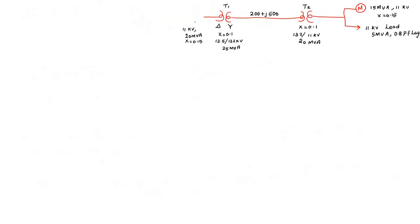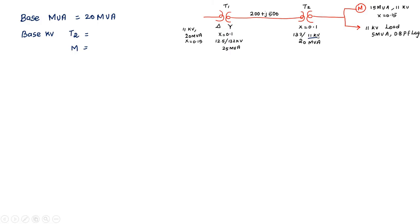Next, I am going to find out the base values for transformer 2 and the motor. Base MVA is common for all components, so it remains 20 MVA. For transformer 2 and the motor, the motor is connected to the low voltage side of transformer 2, which is 11 kV. So the base kV for transformer 2 and the motor is 11 kV.